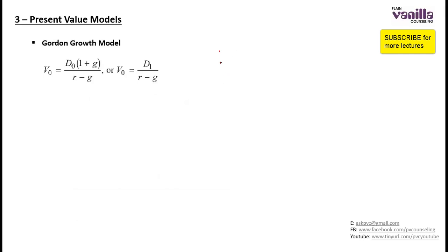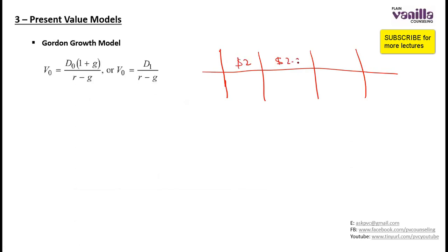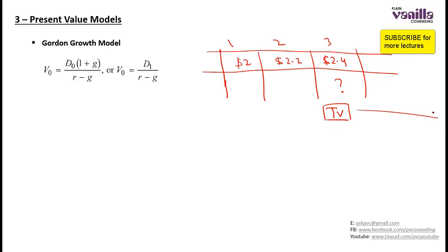Now we will move on to the Gordon Growth Model. Taking the same example — let's say you again have dividends of $2, $2.2, and $2.4, but at the end of the third year you don't know what the price will be. So what you need to do is find out the terminal value. One of the ways to calculate terminal value is to use a model known as the Gordon Growth Model.